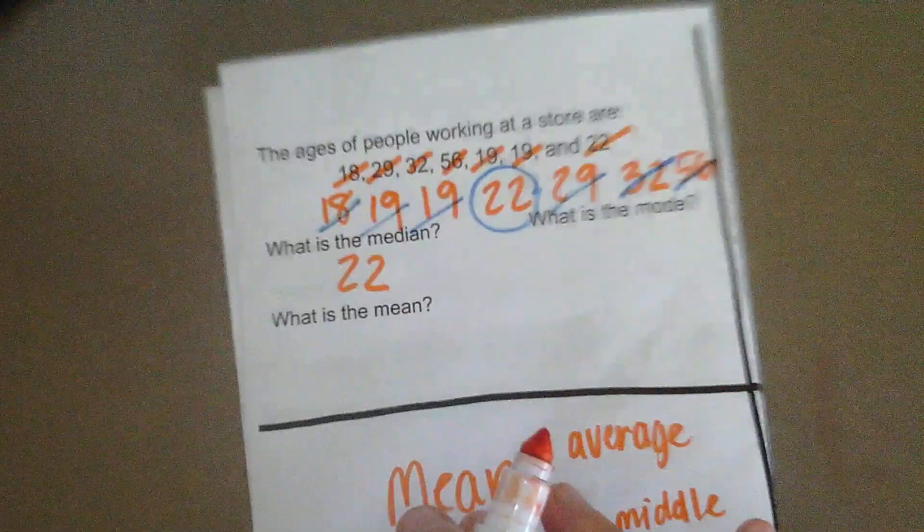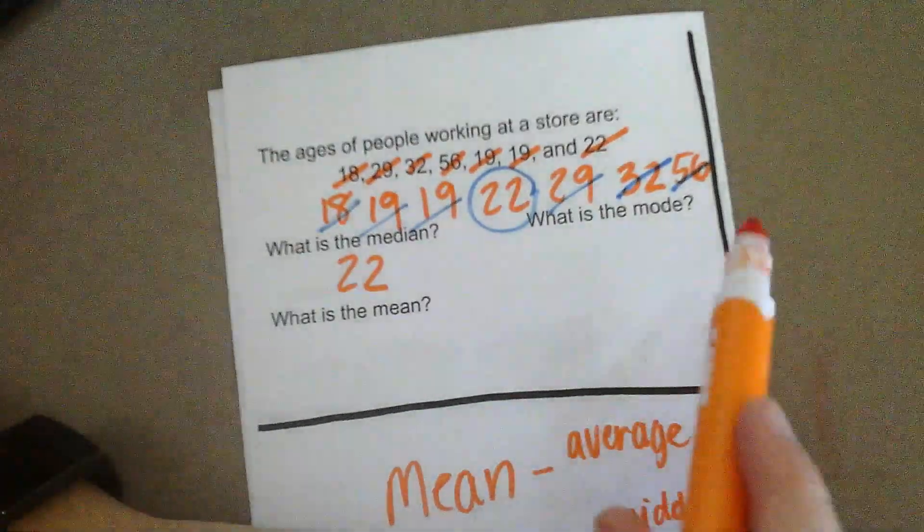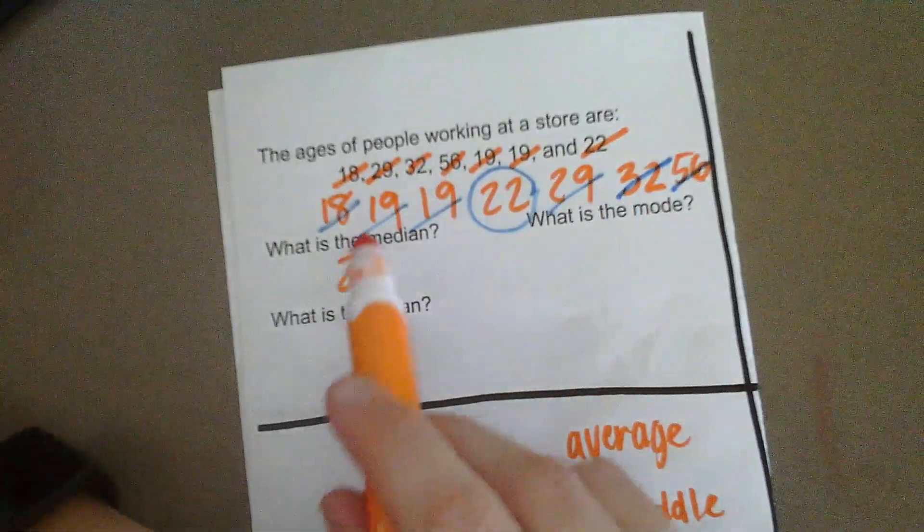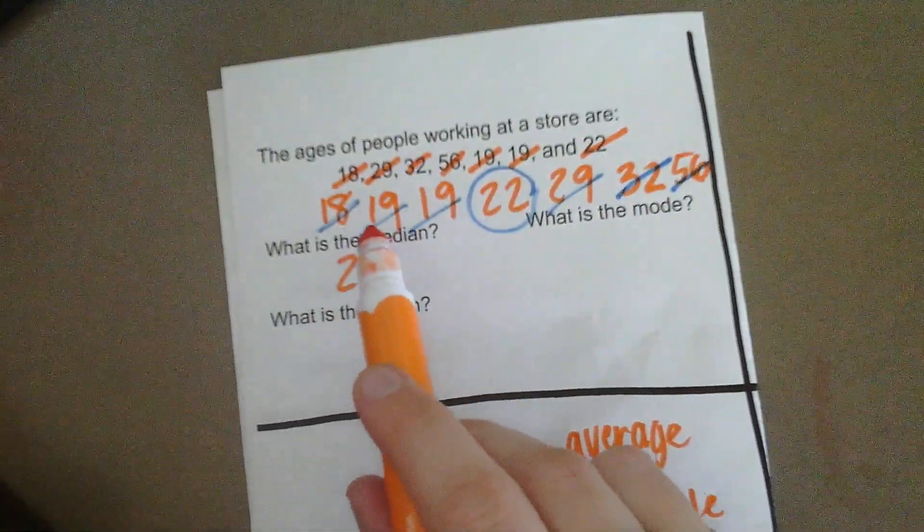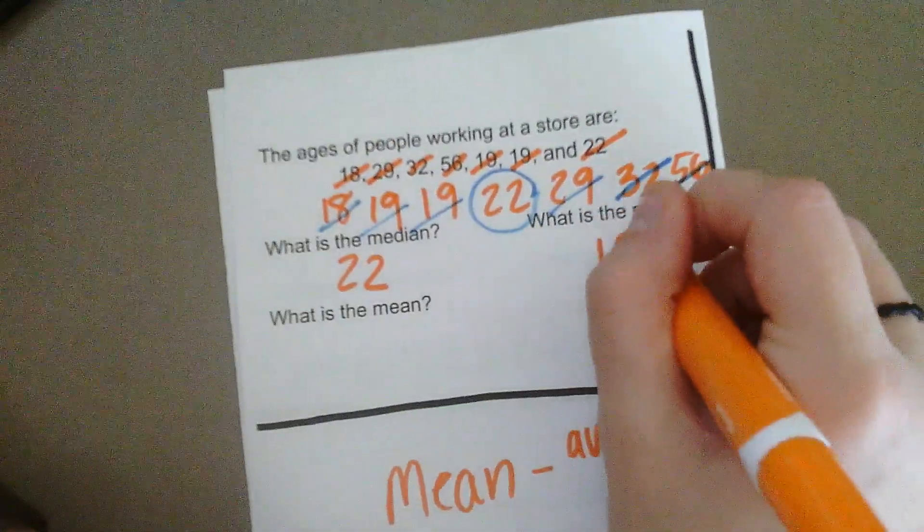The mode is what value occurs the most. So, looking at our list, the number 19 appears twice, every other number appears once, so our mode is 19.